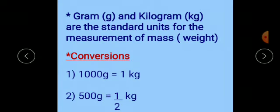Now gram, which is written in short as g, and kilogram, written in short as kg. These are the standard units for the measurement of mass, which is also called weight. Gram and kilogram - these two are the standard units used for the measurement of weight.